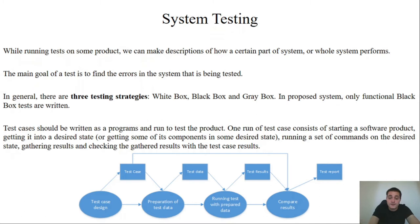What is system testing? System tests gave us the description of how the system is working. A main goal of a test is to show us errors in the system, is to discover or find errors in the system that is being tested. There are three main strategies that are being used currently in the software development process. We have black box testing, white box testing and grey box testing. For this system, we only made black box tests.